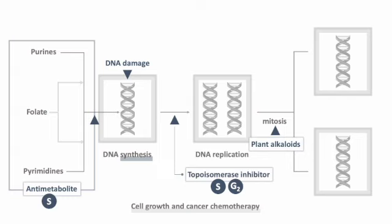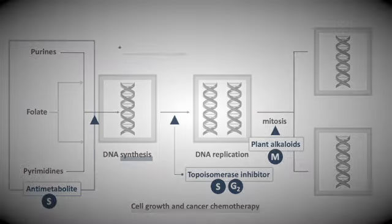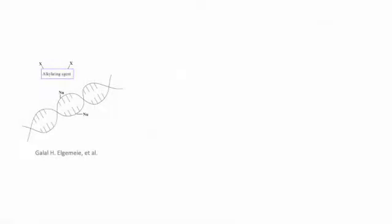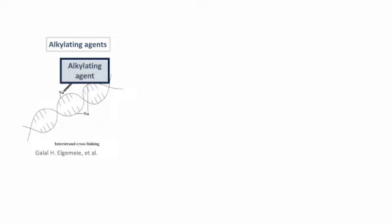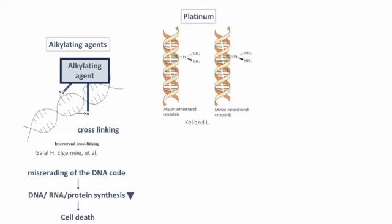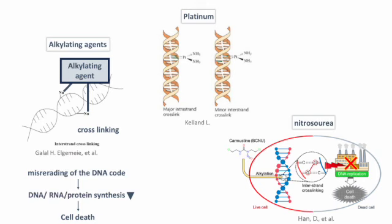Alkylating agents and antitumor antibiotics exert their toxic effects by inducing direct DNA damage. Alkylating agents form covalent bonds with DNA bases, leading to the formation of cross-links within the DNA structure. This alkylation process results in the misreading of the DNA code and the inhibition of DNA, RNA, and protein synthesis, ultimately precipitating cell death. Platinum compounds and nitrogen mustards also function as alkylating agents.